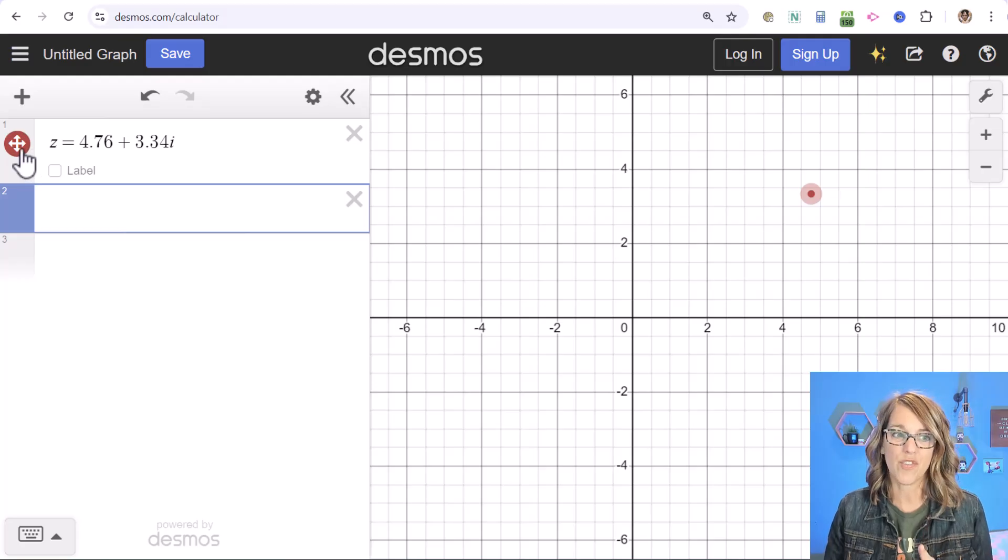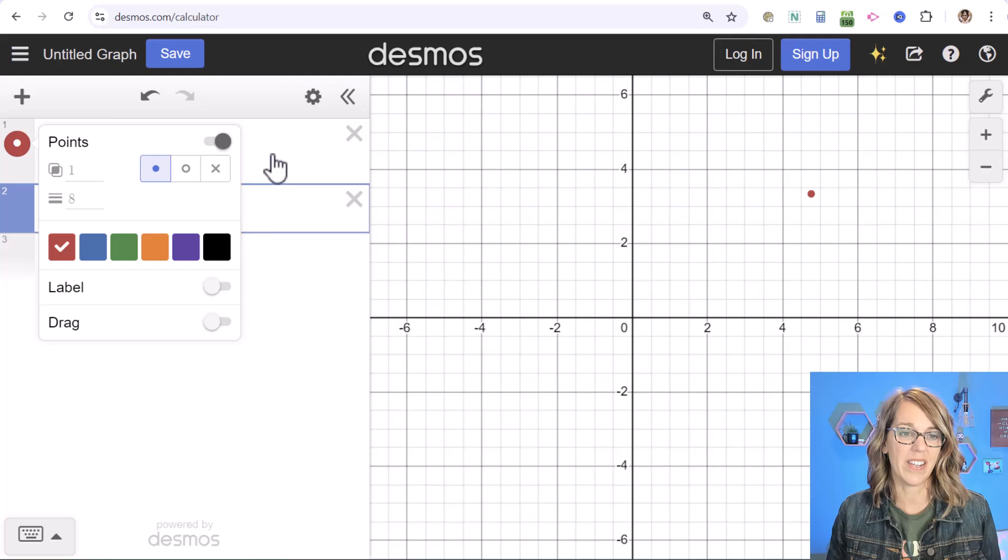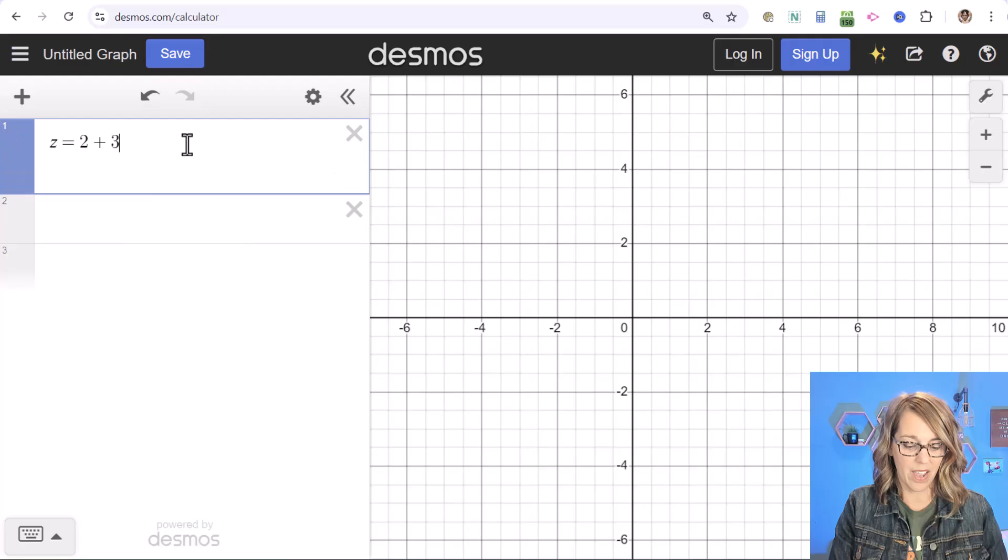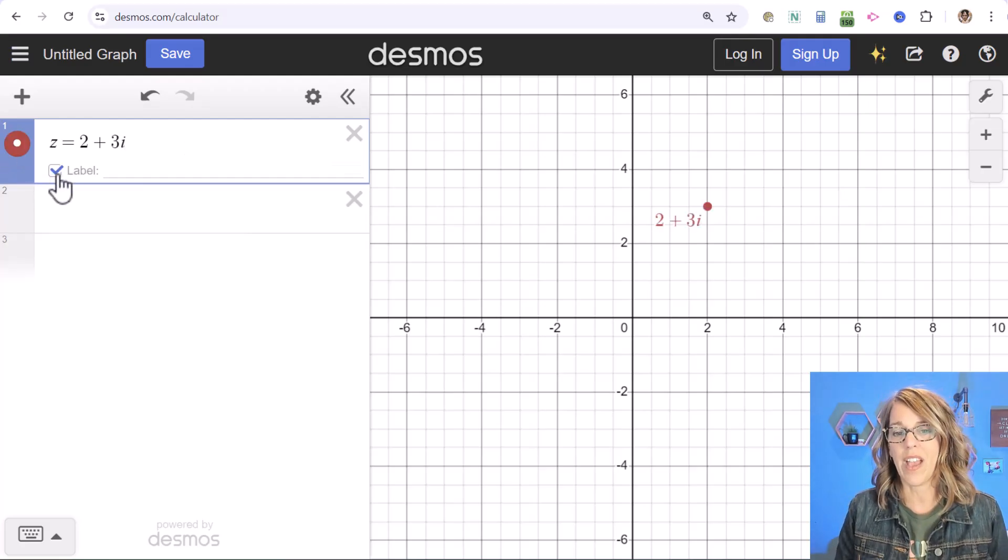But I can also turn drag off. Let me go ahead and turn drag off here for a minute. And I'm going to redefine this as a simpler value, so 2 plus 3i. Let's label it 2 plus 3i.